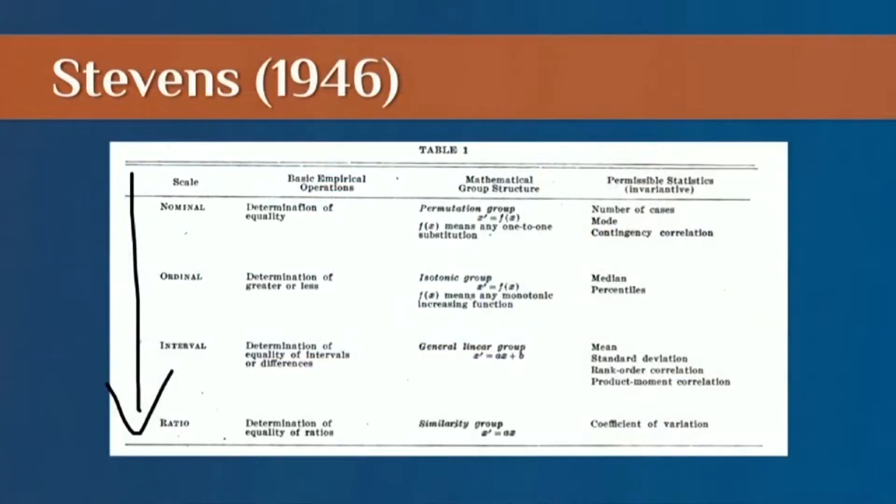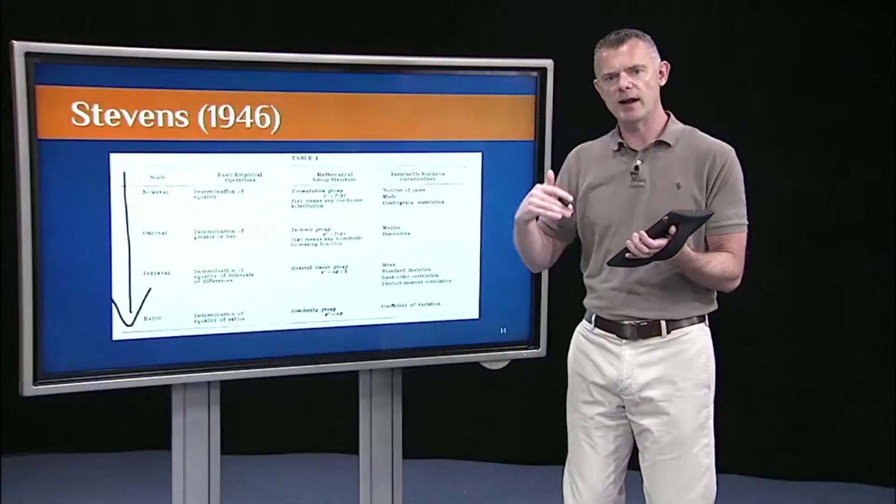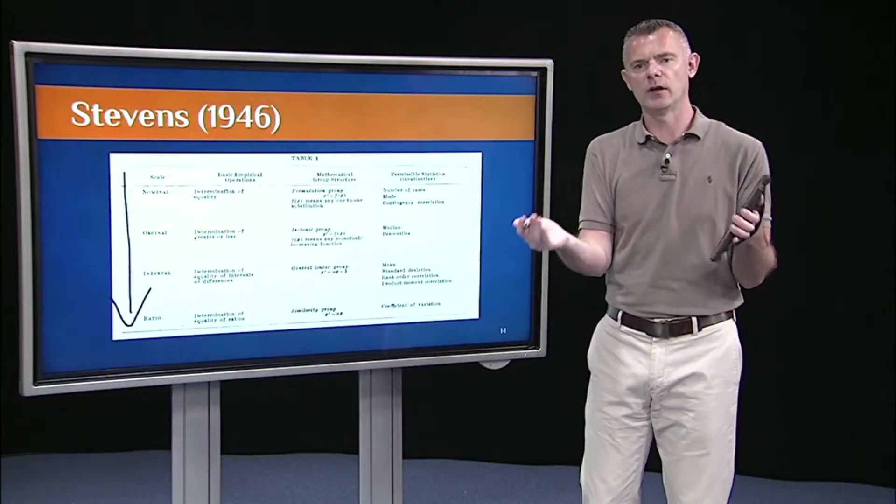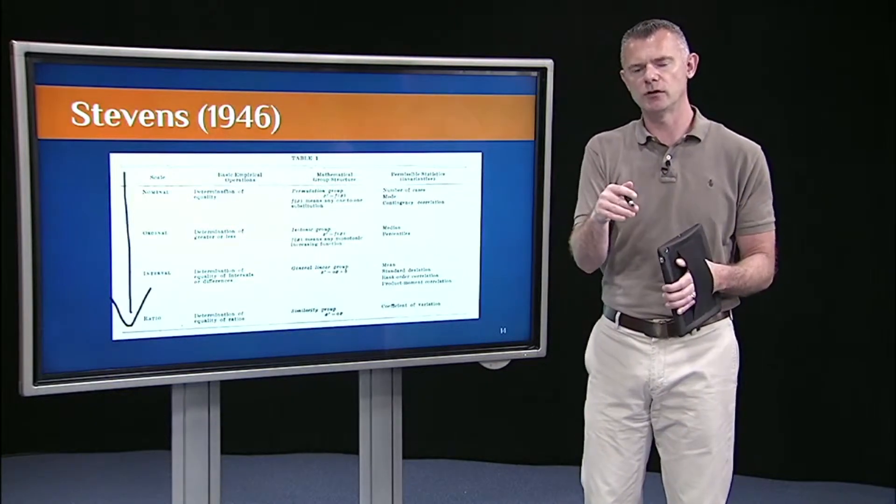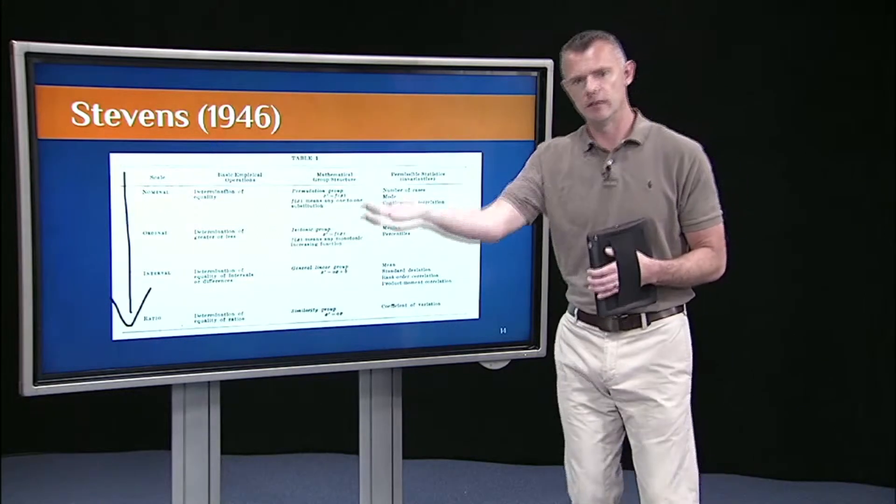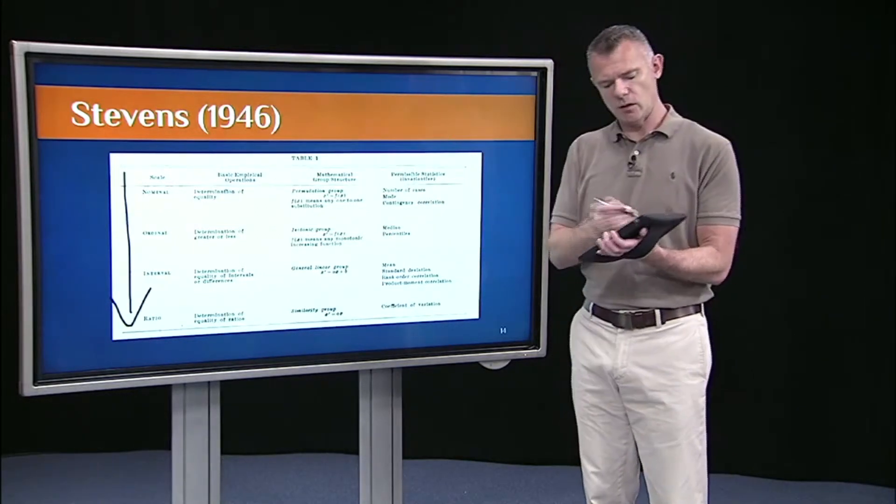As you go down this list, you'll see as you go from nominal to ordinal to interval to ratio, you're allowed to ask more and more questions of your variables. For ordinal, I can ask not only are you the same or different, but I can ask are you ranked higher or lower? Do you come from the same or different countries, and does your country have a greater than or less than population than the other student?